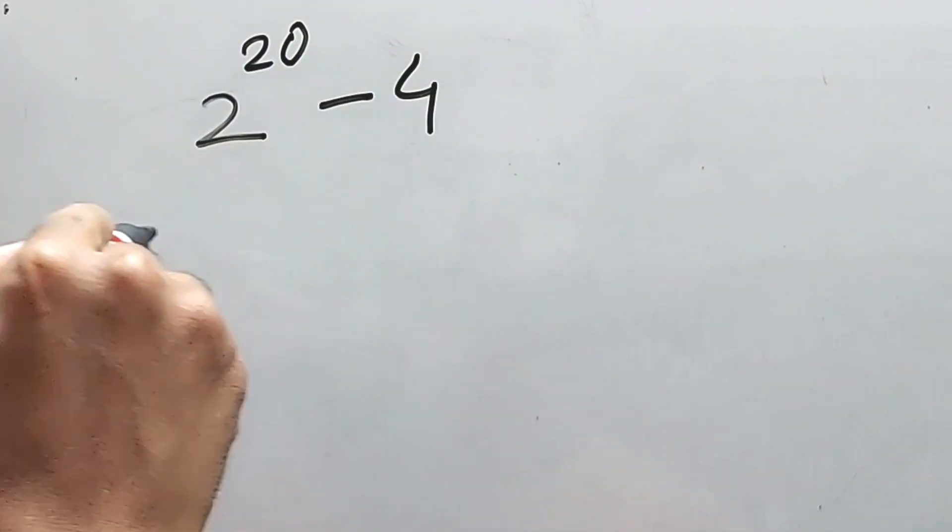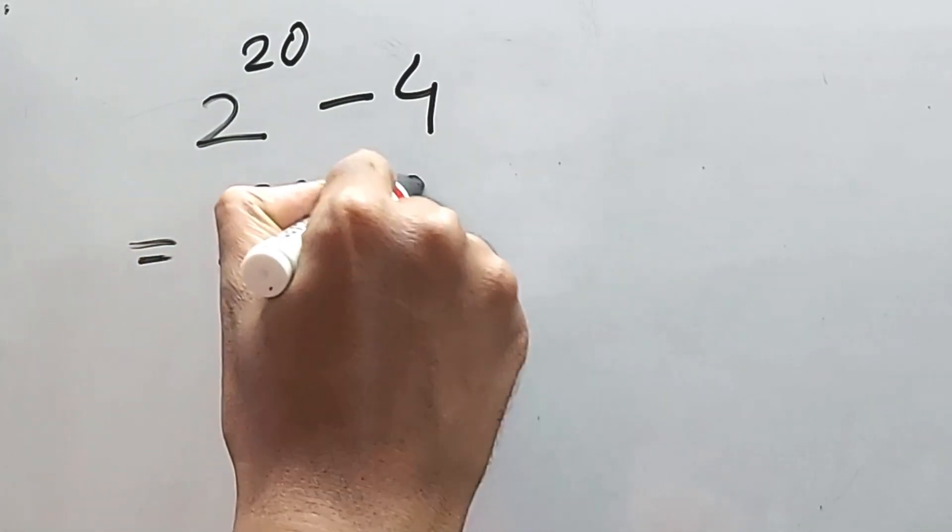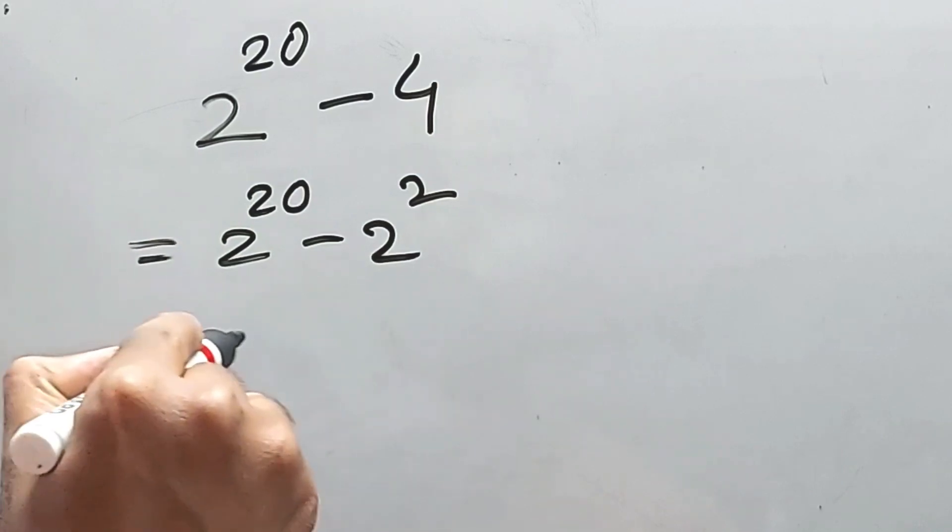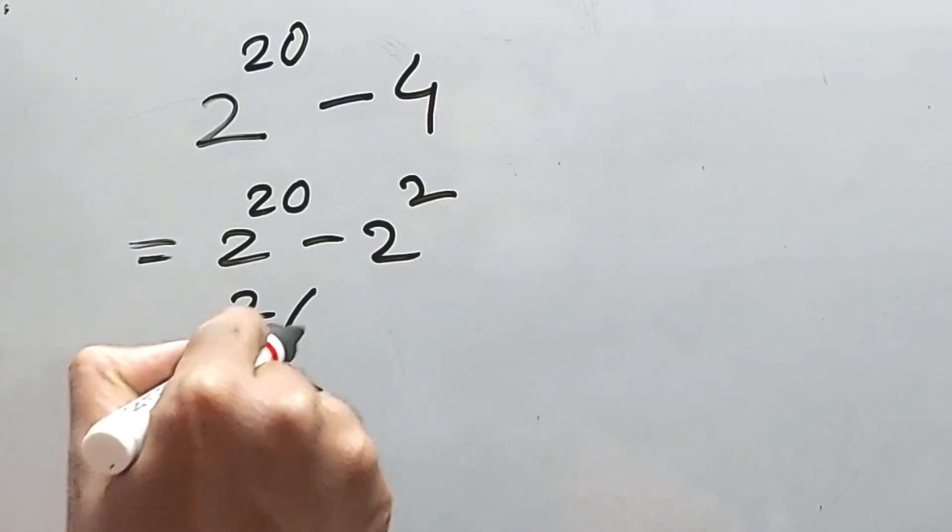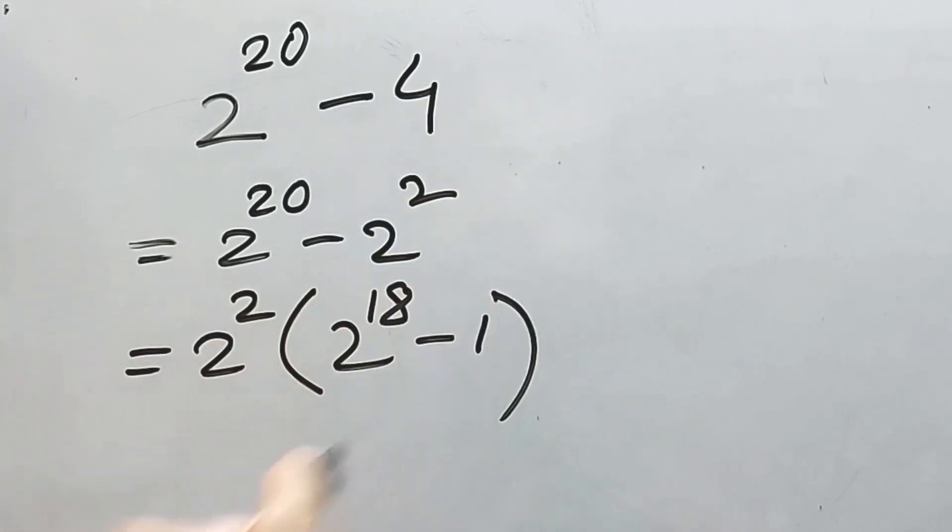This one is equal to 2 to the power 20 minus 2 square. Now 2 square will be common for both the terms. So if we take it, we will get 2 to the power 18 times 2 to the power 18 minus 1, right?